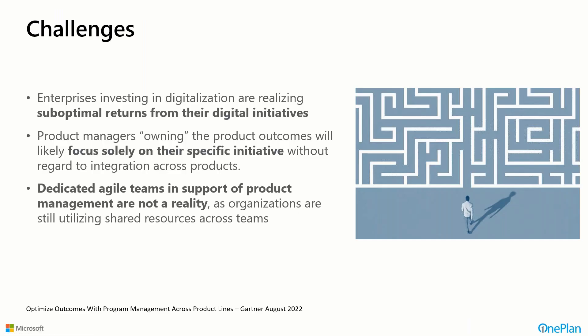With that landscape, as we advance in new product development, there are many digital initiatives underway. Many enterprises are delivering suboptimal returns for these digital initiatives because various dimensions aren't being considered. Product management may focus solely on their specific product without regard to integration across all product lines. Organizations must improve this. The move towards agile approaches — with dedicated agile teams specialized across all delivery dimensions — is not yet reality, as organizations are still shifting and sharing resources rather than having dedicated stable teams.